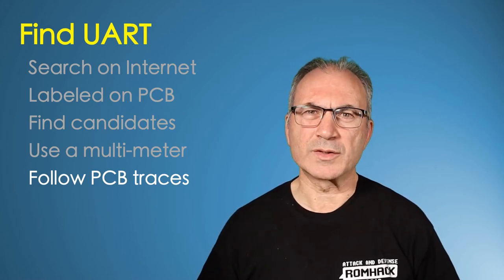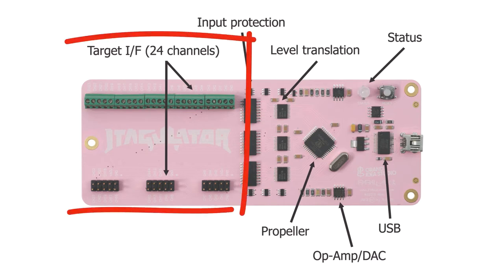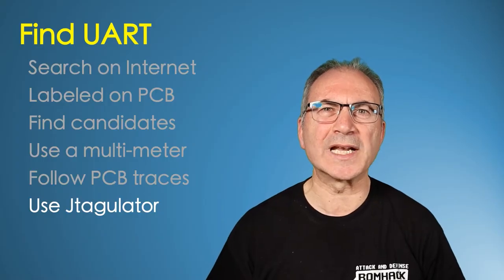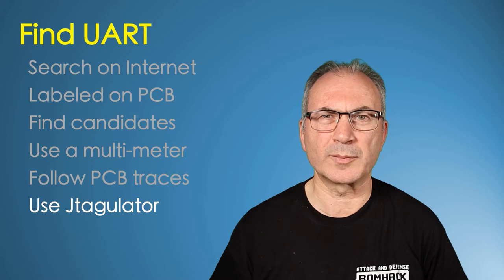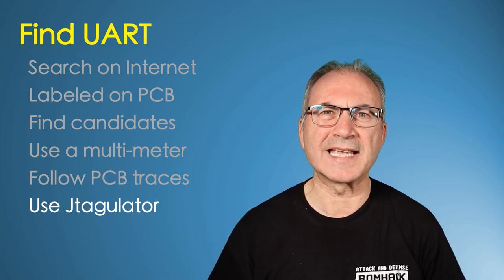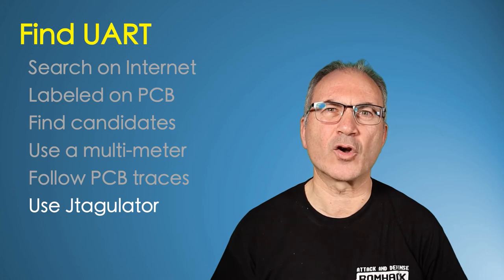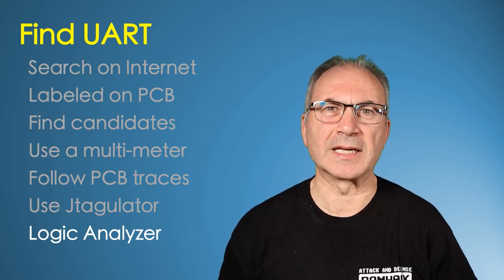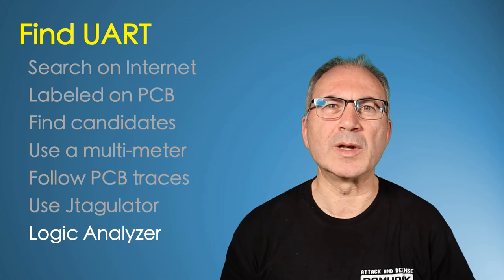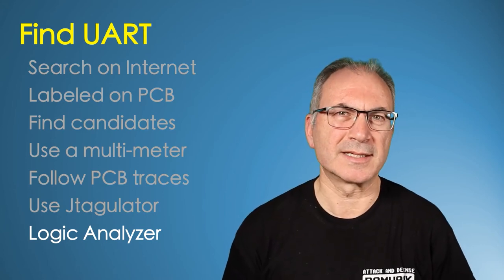We can also use tools like the JTAGulator to identify the UART position. JTAGulator is a fantastic tool — it is a board with many pin headers that we can attach to potential UART or JTAG pin candidates, and it will run automatic scanning logic to identify the pinout of the UART or JTAG interface. We can also use an oscilloscope or a logic analyzer to identify the TX pin, since during boot something will be written on the serial console and the TX pin will oscillate between zero and VCC, though this may be a bit overkill.